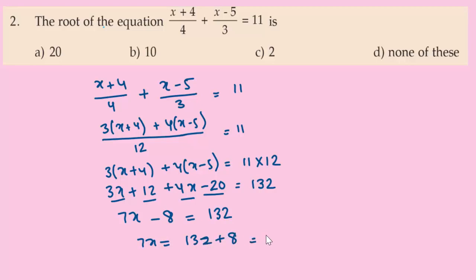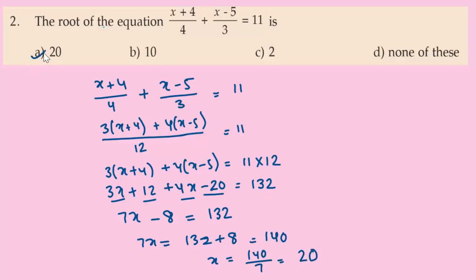7x equals 140, so x equals 140 divided by 7, which equals 20. The answer is Option A. Option A is the correct answer.